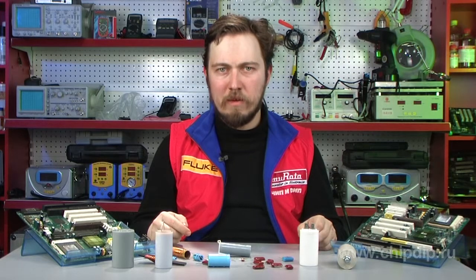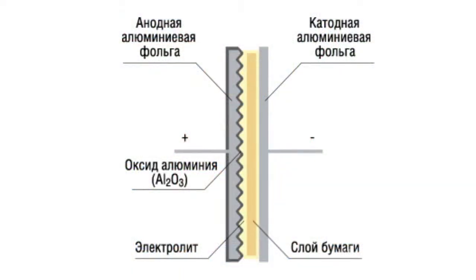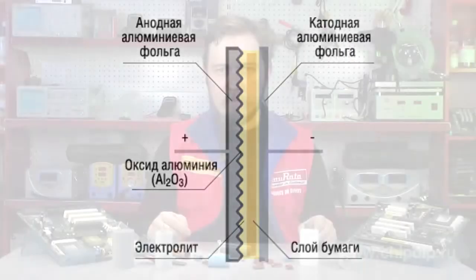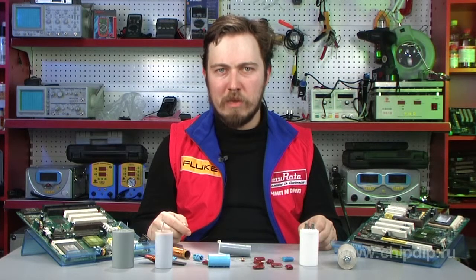The value of ESL is determined only by capacitor design. Electrolytic, paper, and other similar capacitors are essentially two twisted strips of metal foil separated by an insulator. This type of construction results in higher self-inductance, causing the capacitor to behave more like an inductor at frequencies above a few MHz.